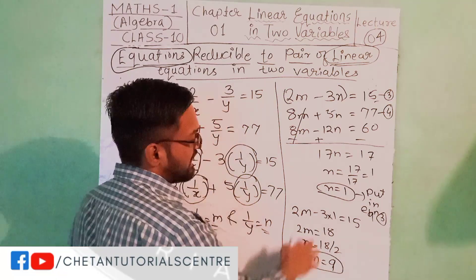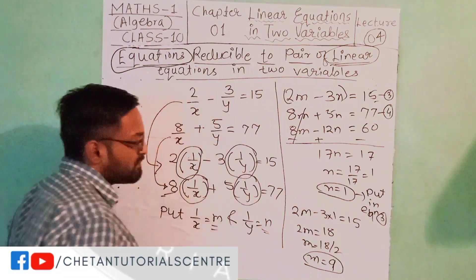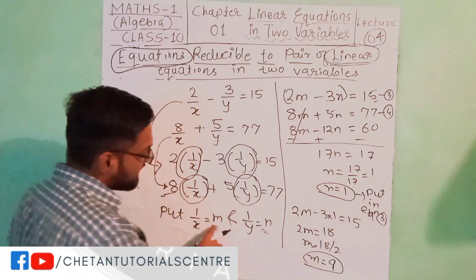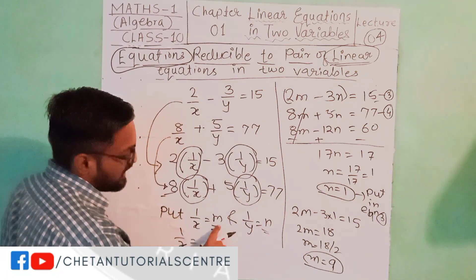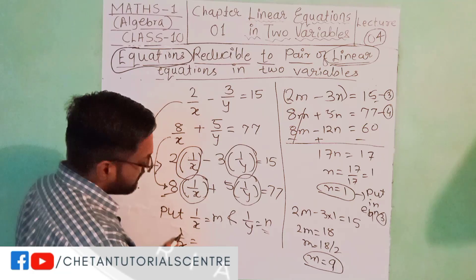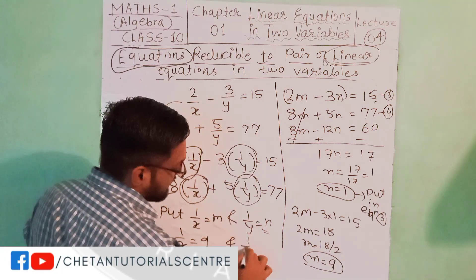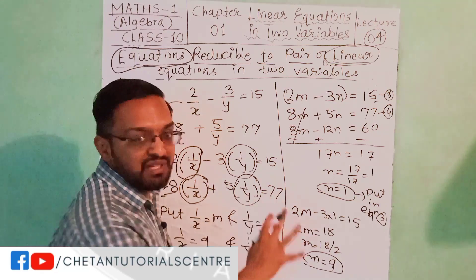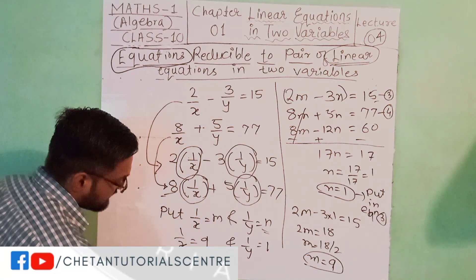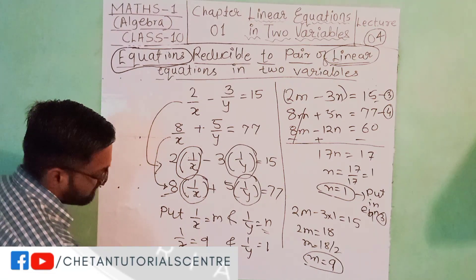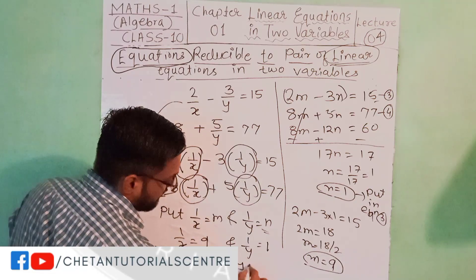Now n is equal to 1. Substituting n equals 1 into equation 3: 2m minus 3 into 1 is equal to 15, so 2m is equal to 15 plus 3 equals 18, therefore m is equal to 18 upon 2, so m is equal to 9. Now we have the values of m and n. Since 1 upon x equals m equals 9, we get x equals 1 upon 9. And since 1 upon y equals n equals 1, we get y equals 1.